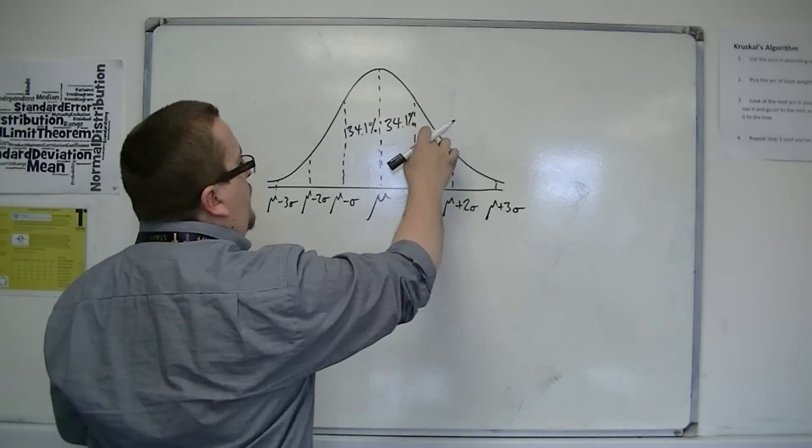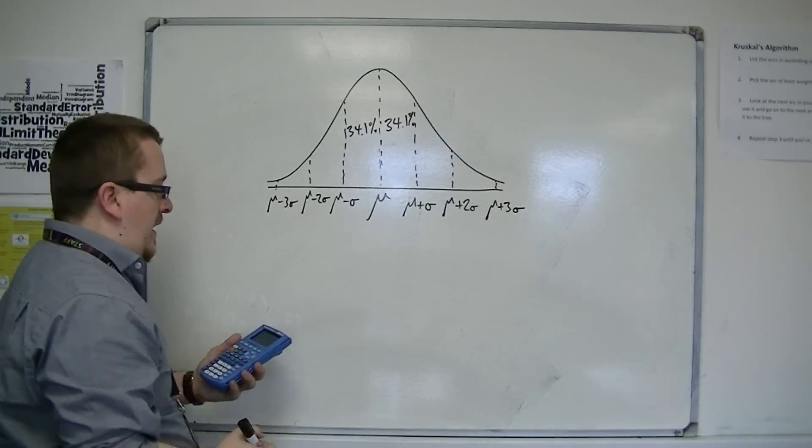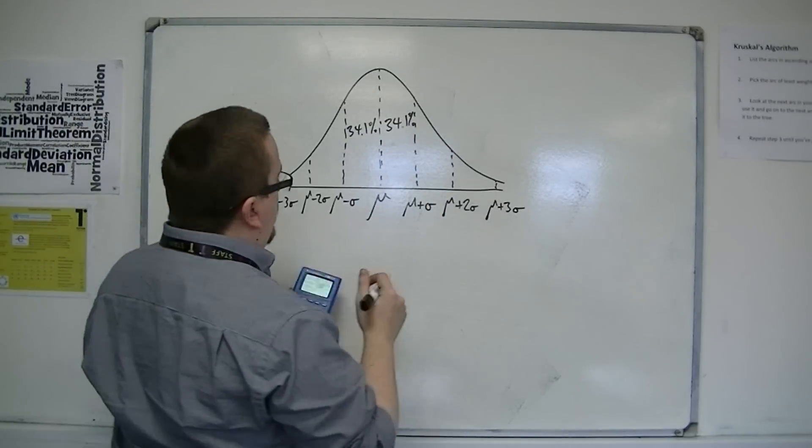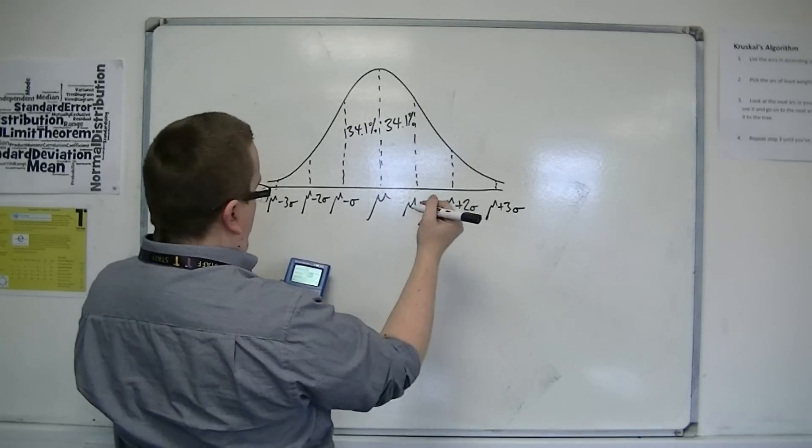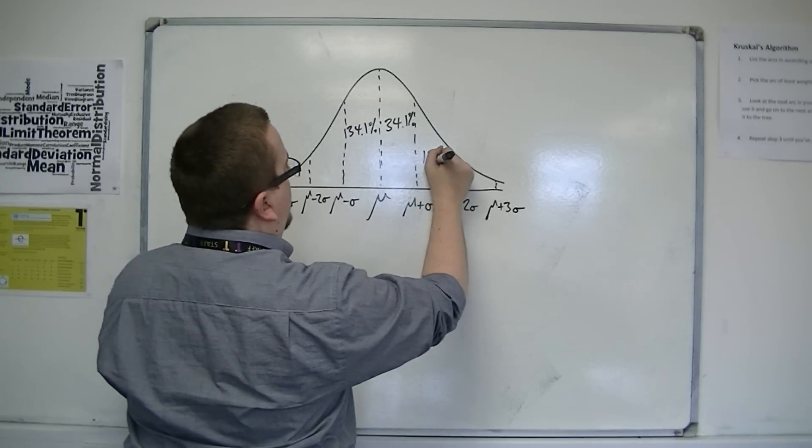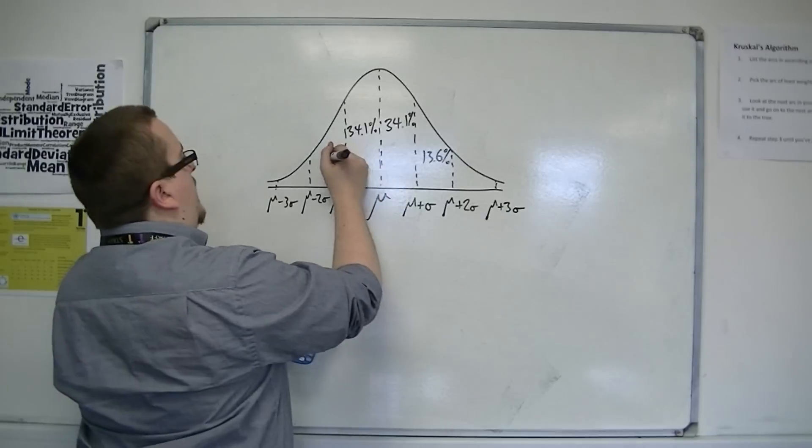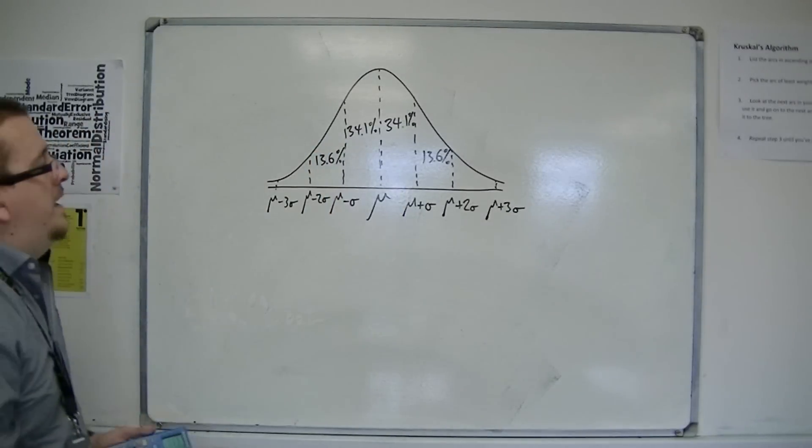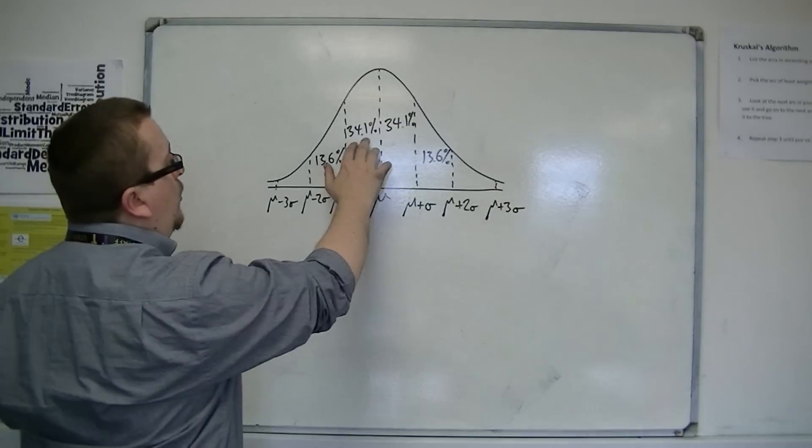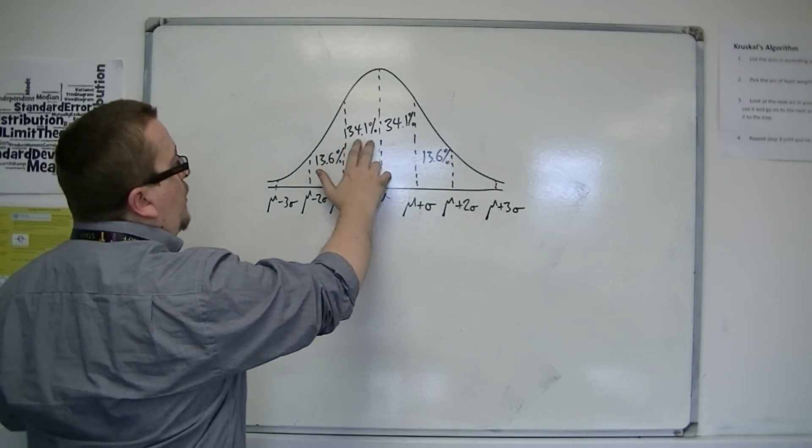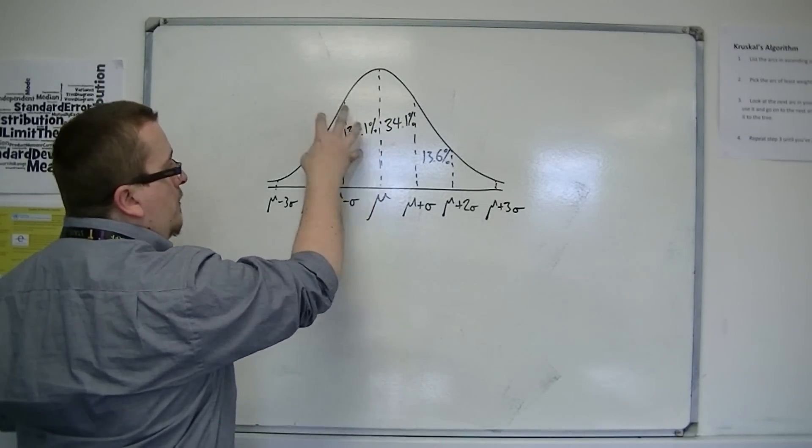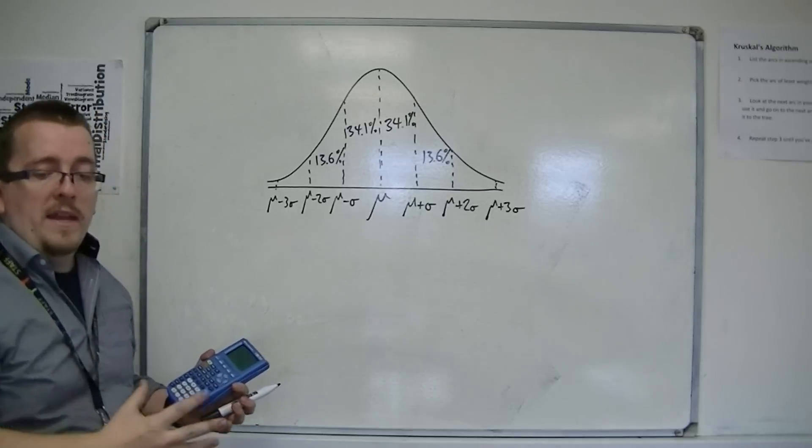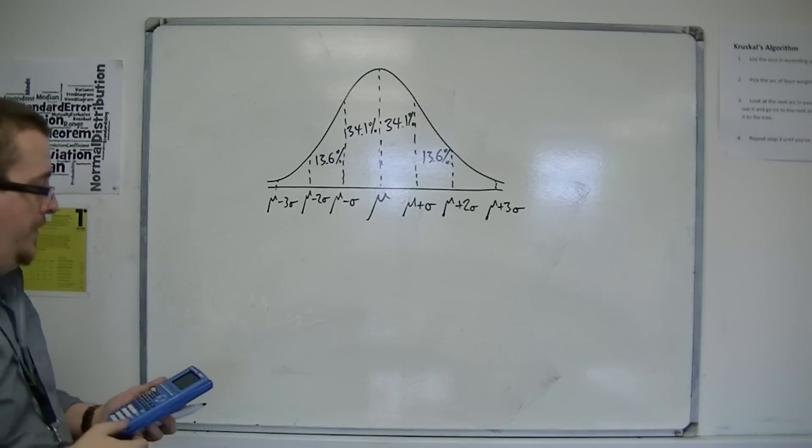Then if you go to two standard deviations, then you're looking at roughly 13.6% there and 13.6% there. So together you're looking at 47.7% either side of the mean, 47.7% either side.